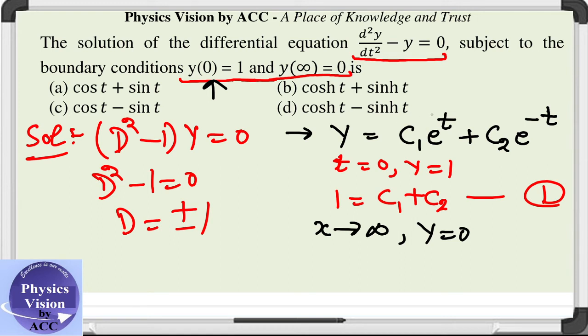At e raised to the power t, this variable is t. At t approaches to infinity, this will lead to infinity, and since the y value is 0 at infinity.